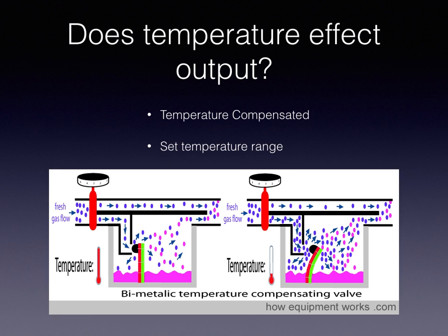Does temperature affect output? It's a tricky question. Variable bypass vaporizers are temperature-compensated via that bimetallic strip, but they only work within a certain temperature range — typically 15 to 35 degrees Celsius. As temperature increases, the vapor pressure of the anesthetic increases in a non-linear manner, whereas the temperature compensation is linear. Output may become unpredictable if the boiling point of the agent is reached. If temperature falls below the specified range — in this case 15°C — output may be unpredictably low. This range can vary from manufacturer to manufacturer.